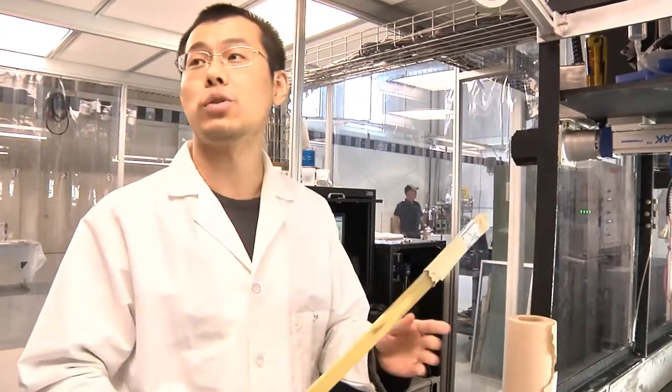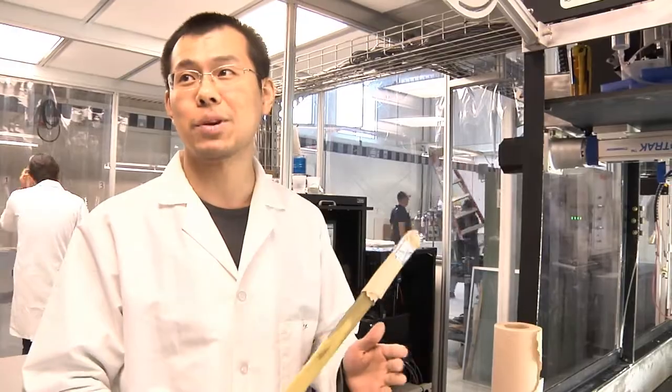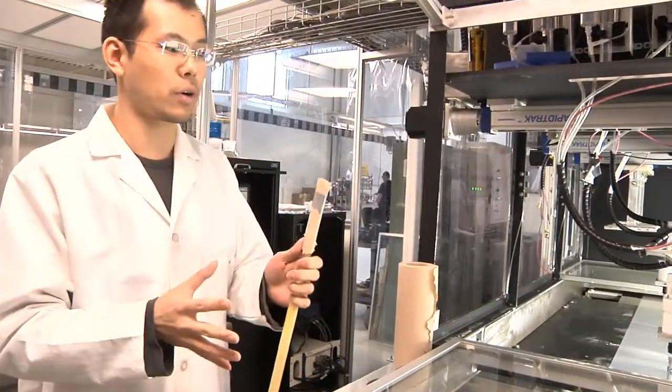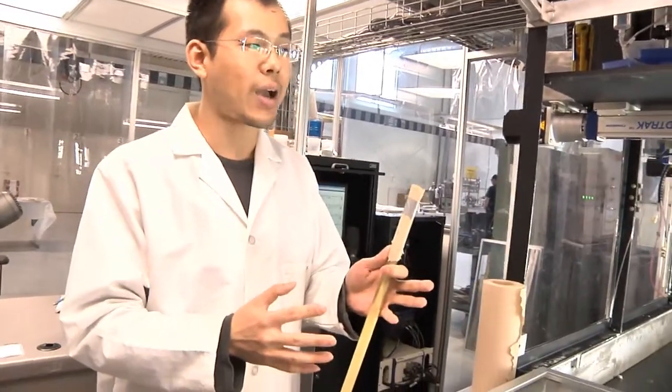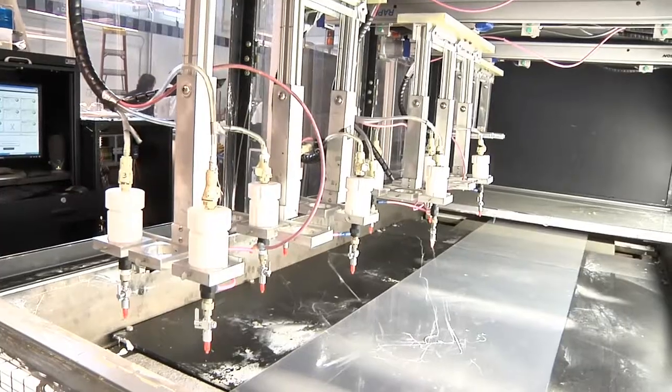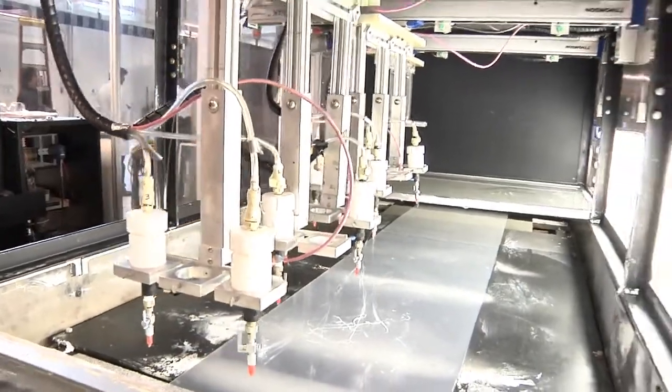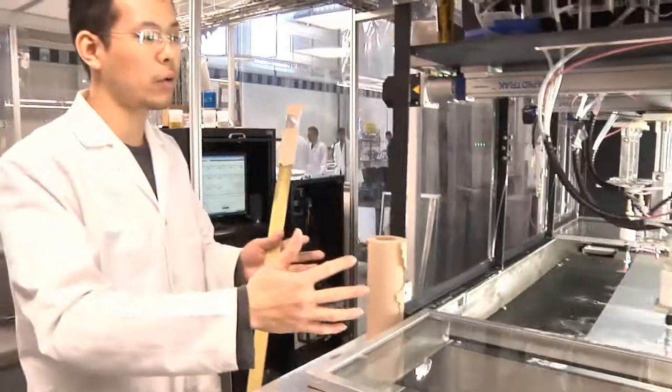If we use electrospinning to produce fibers, we can get nanofibers, very thin fibers. And with these very small fibers, the reinforcing effect is very good. Because the fibers are very thin, they are kind of transparent. We can make transparent, conductive polymer film.